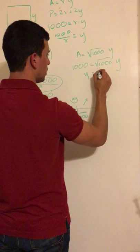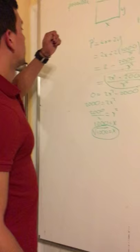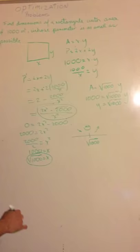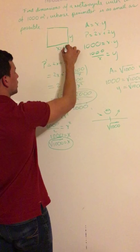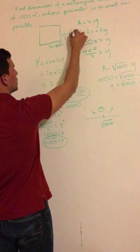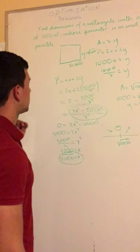So as you can see we have y equals the square root of 1000 and x equals the square root of 1000, which is telling us that we have a square here. This is the answer for this question. This is the minimum value for the perimeter with an area of 1000 square meters. Thank you.